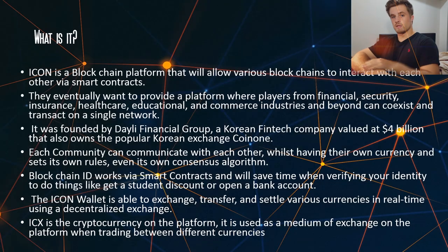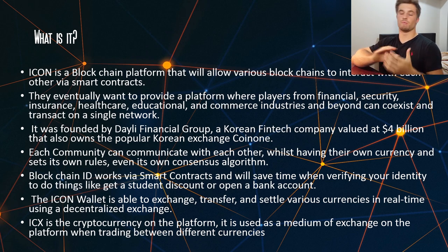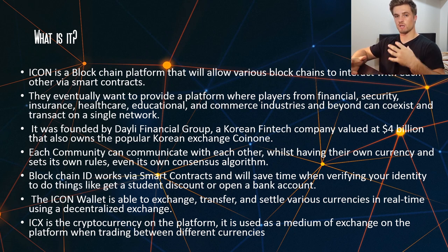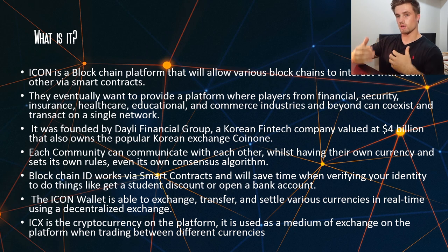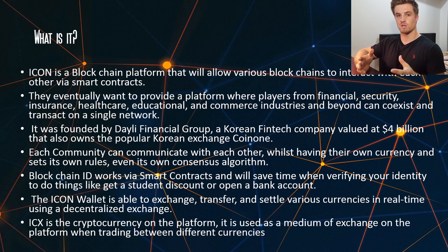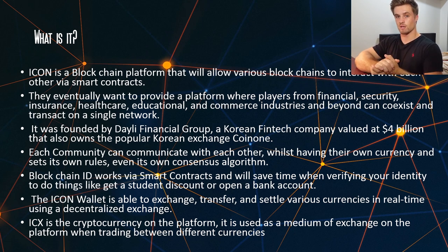So to start off, what is ICON? ICON is a blockchain platform which allows various blockchains to interact with each other via smart contracts. It's connectivity between blockchains — allowing blockchains to communicate with each other digitally and enable cross-chain transactions and things like that.